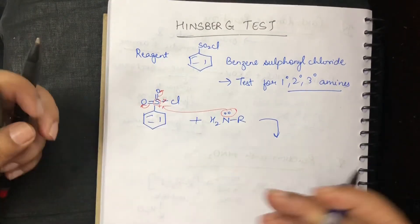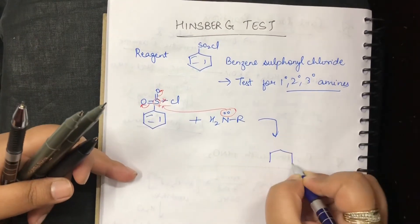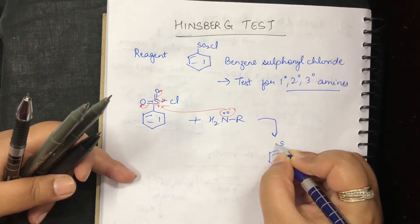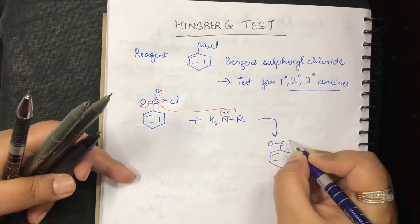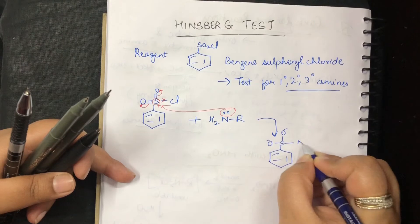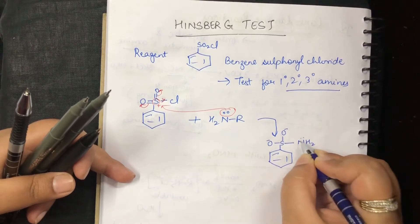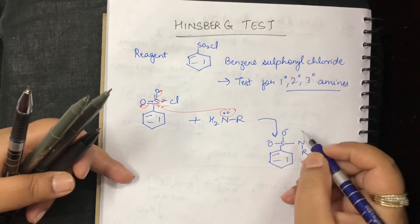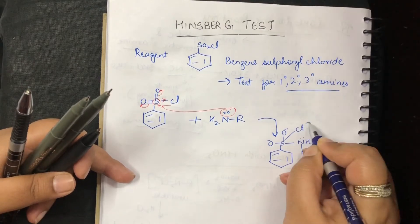I will get a compound like this. I will have a sulfur here and I will have oxygen negative, and I will have NH2 and also NH2 will be having this R and this chlorine will be negative here.